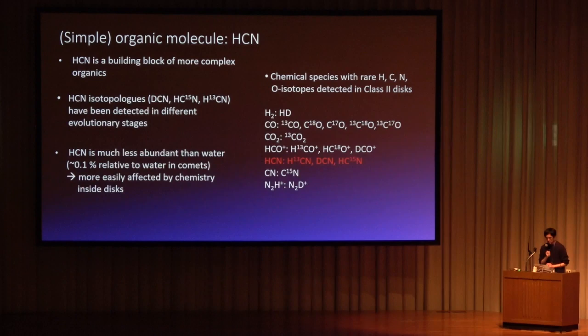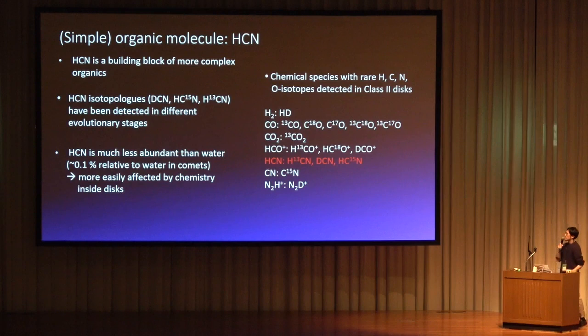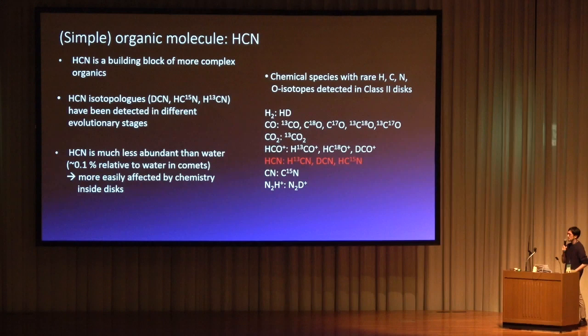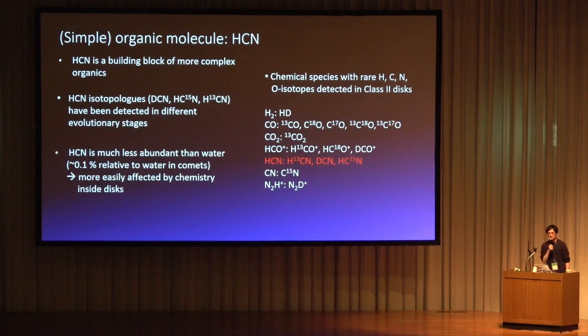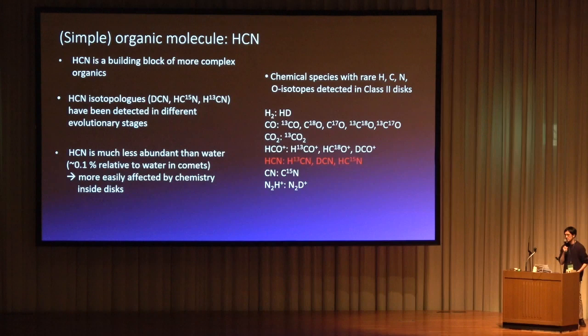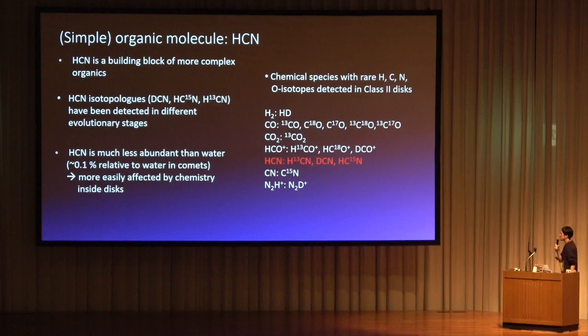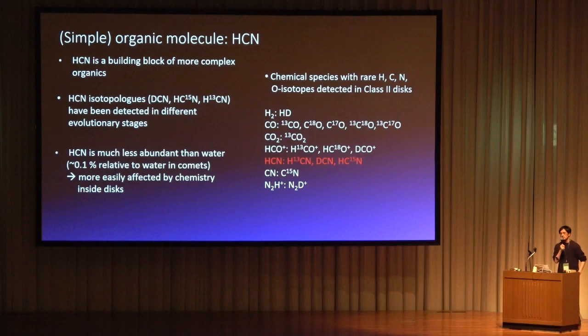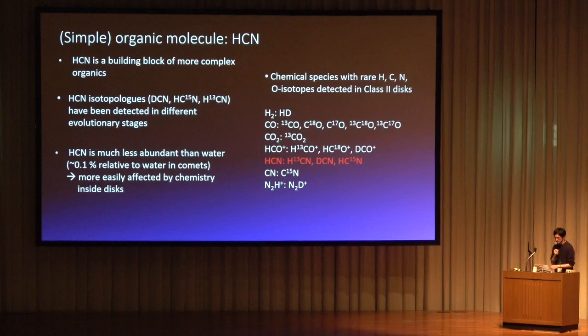Let's go on to organic species. We focus on HCN because it is a building block of more complex organics and is one of the most studied species. Various HCN isotopologues have been detected in different evolutionary stages of star and planet formation, so we can track HCN chemistry using isotope ratios. HCN is also much less abundant than water — in comets, its abundance is 0.1% relative to water — so HCN would be more easily affected by chemistry inside disks.